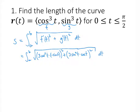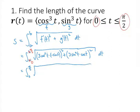Generally these integrals turn out to be pretty nasty, but this one we're actually going to be able to do. I should note that instead of a and b, my two bounds are 0 and π/2. So the integral runs from 0 to π/2. When we work this out, we get 9 cosine⁴(t) sine²(t) plus 9 sine⁴(t) cosine²(t).